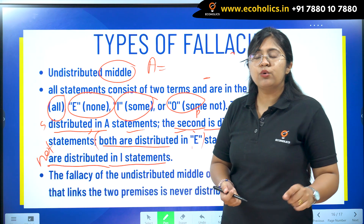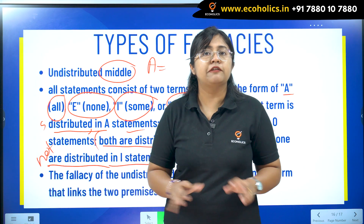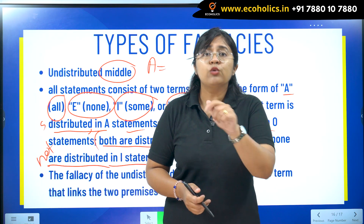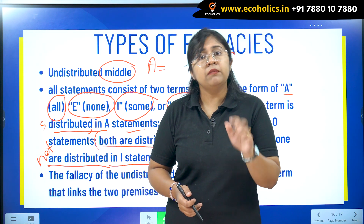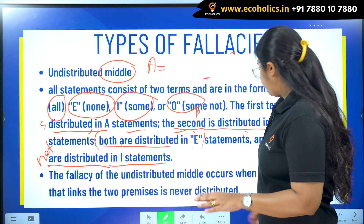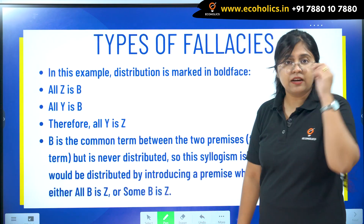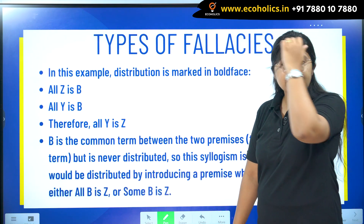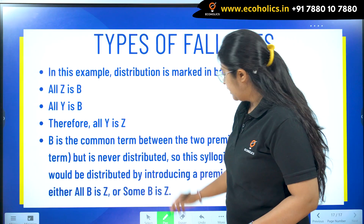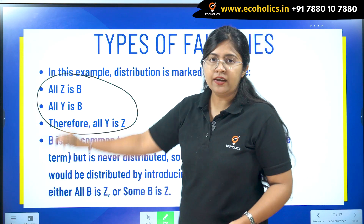However, we will now show with the undistributed middle fallacy how conclusions can become wrong. Let's go further and look at this example. In this example, let us look at these three statements.